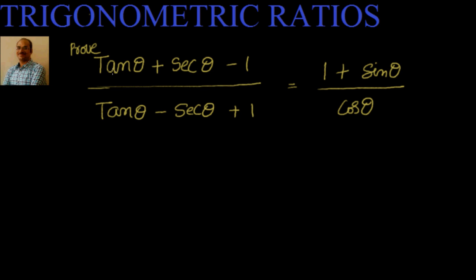If you look at the right hand side, this is nothing but 1/cos θ + sin θ/cos θ, that is sec θ + tan θ. And here also we have tan θ and sec θ. So we can do this problem in two ways — convert tan and sec into sin and cos, or directly work with tan θ and sec θ. Let's go ahead with the direct approach.